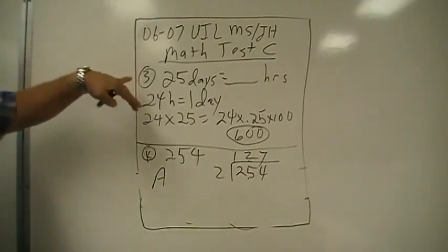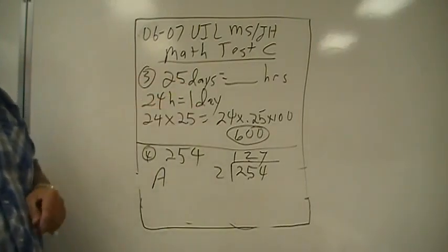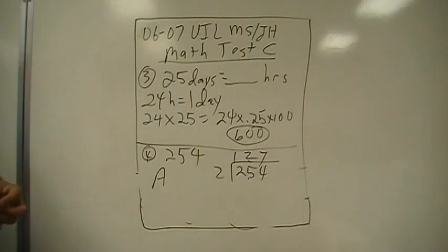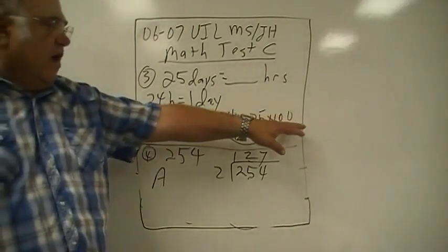Number three: 25 days is how many hours? 24 hours in a day, so the quickest way to multiply this - 25 is the same as .25 times 100.